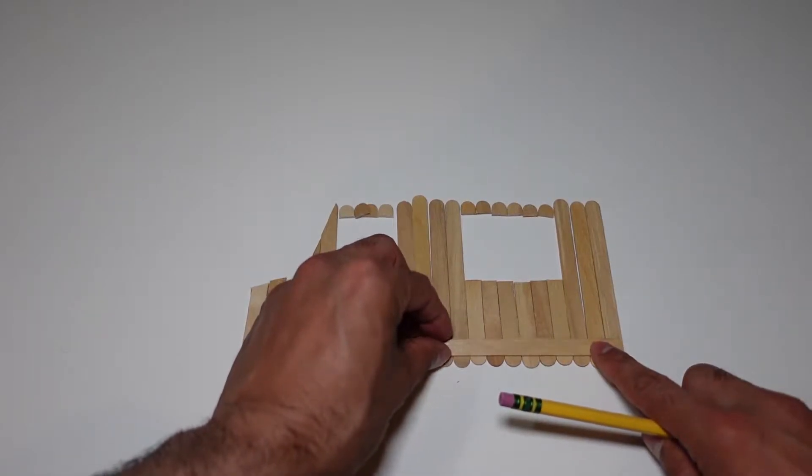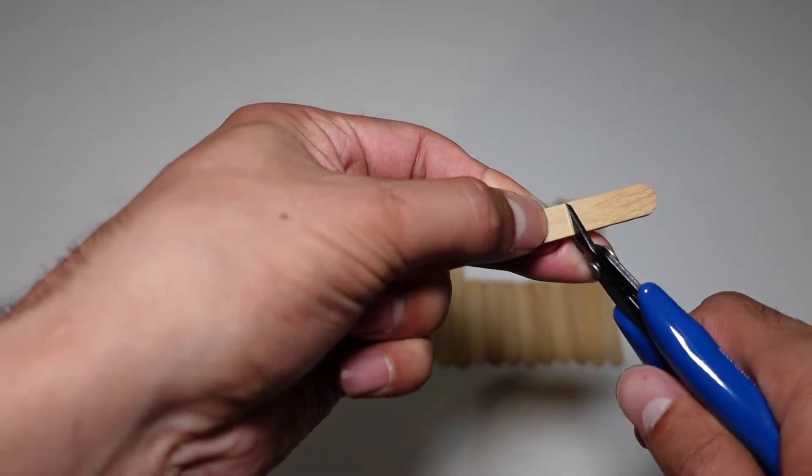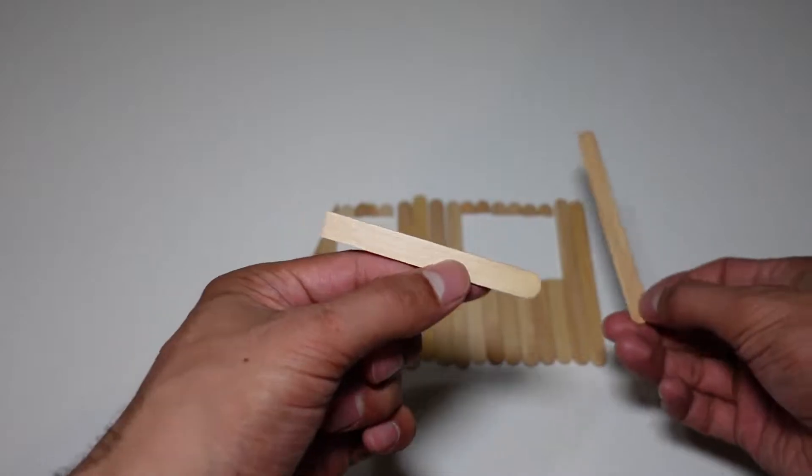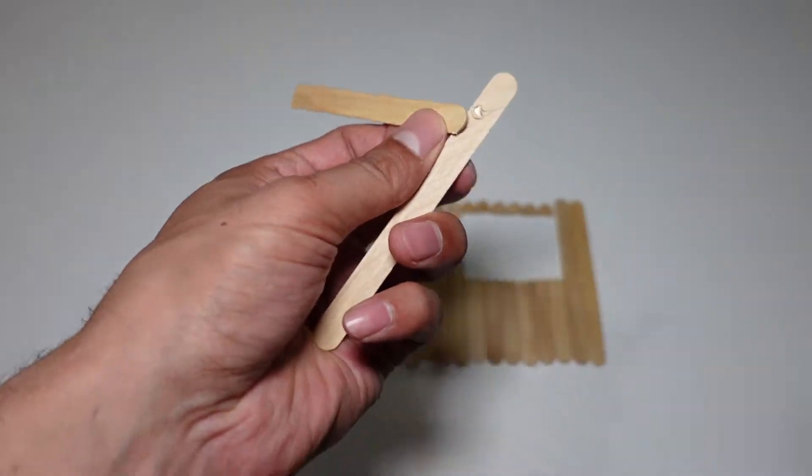Let's connect the sticks together with another popsicle stick. We will start with the 9 sticks from the back. We need a hot glue gun.